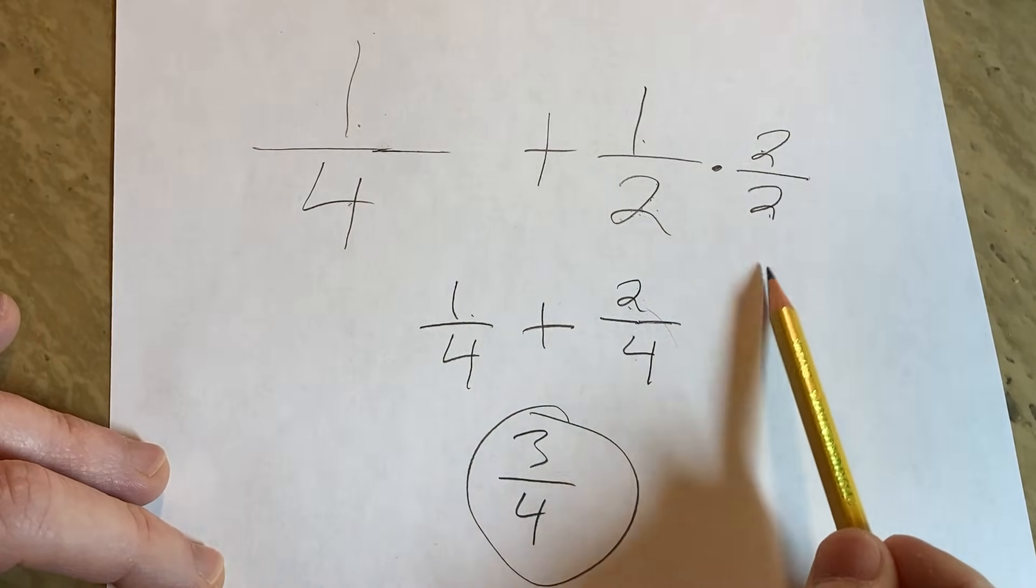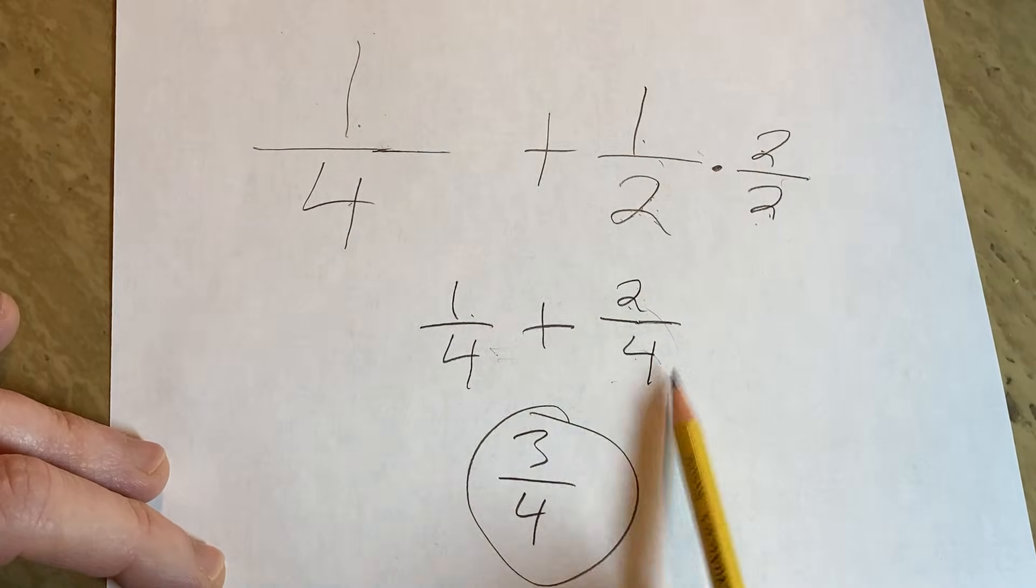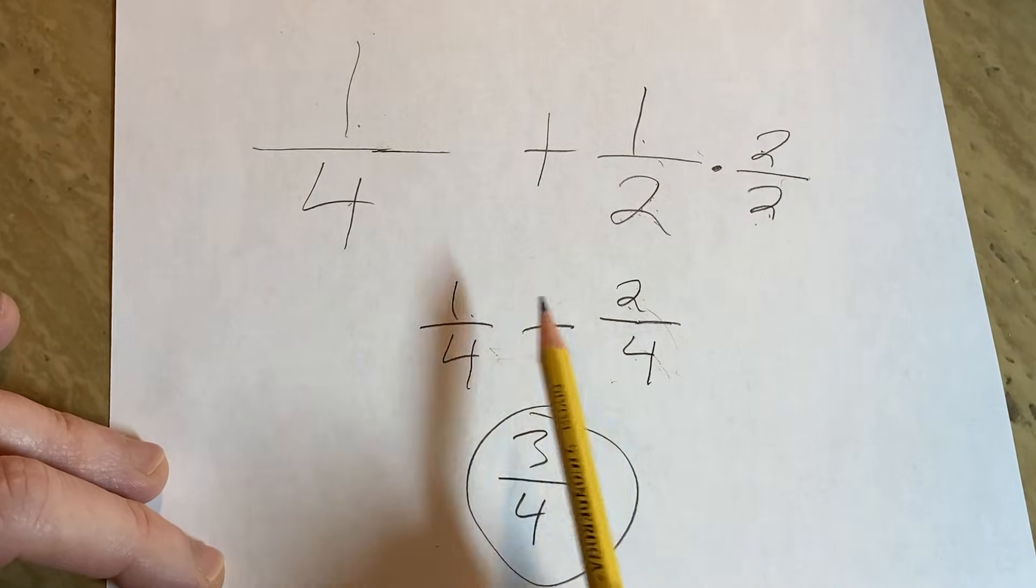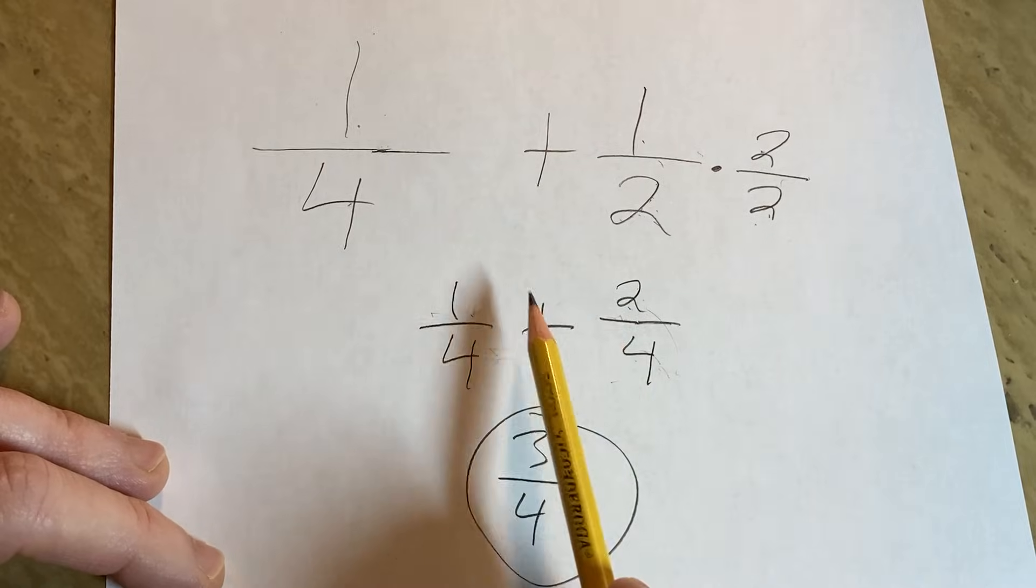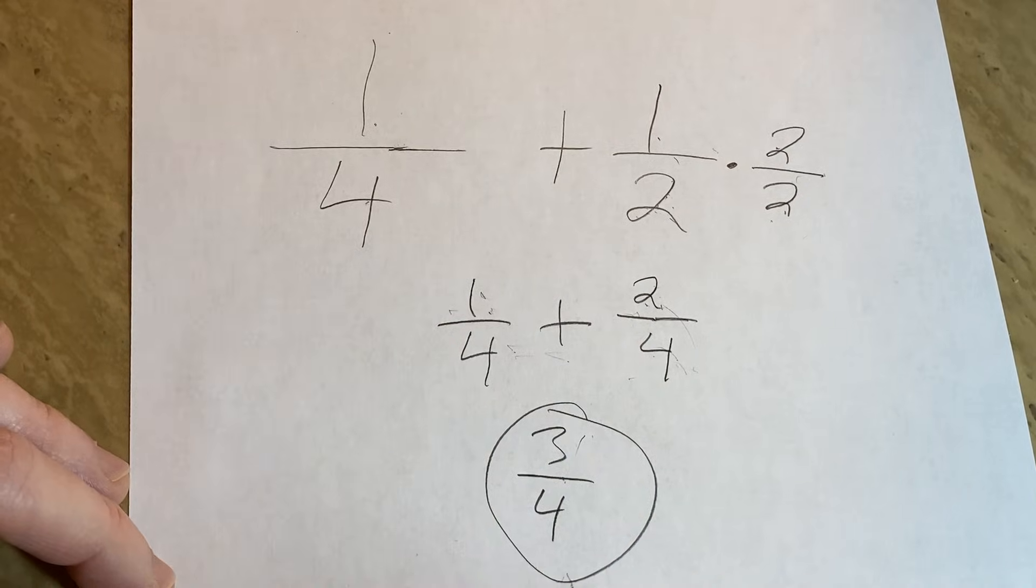So multiply by 2 over 2. 2 times 1 is 2, 2 times 2 is 4. Then once you have the same denominator, the number on the bottom, you can multiply straight across the numbers on the top. 1 plus 2 is 3. And then you just write it over the same denominator, which is 4. Good luck.